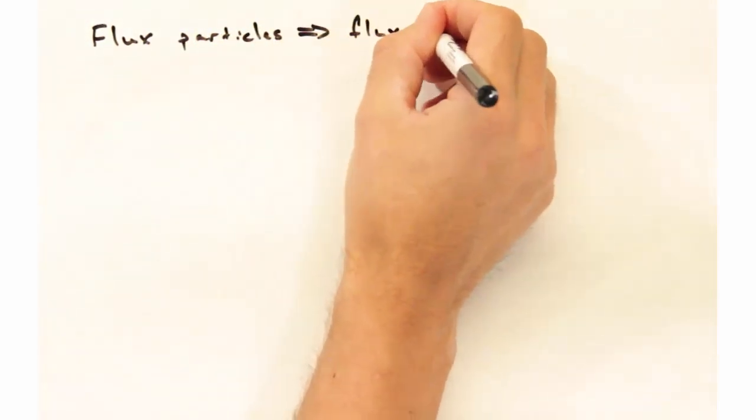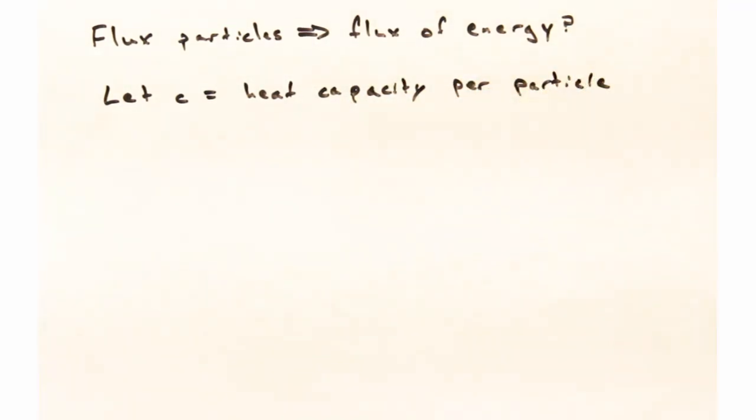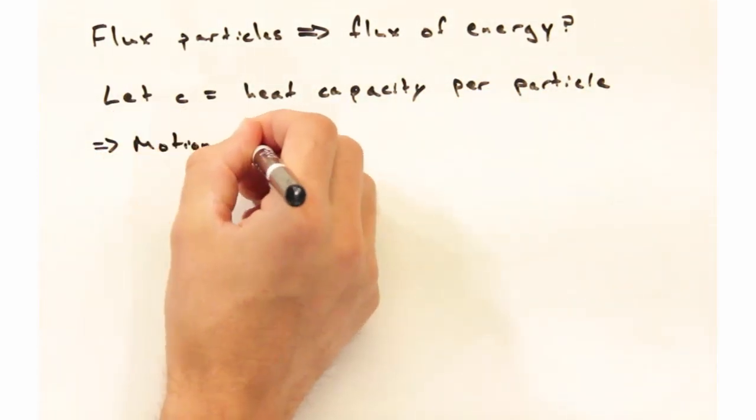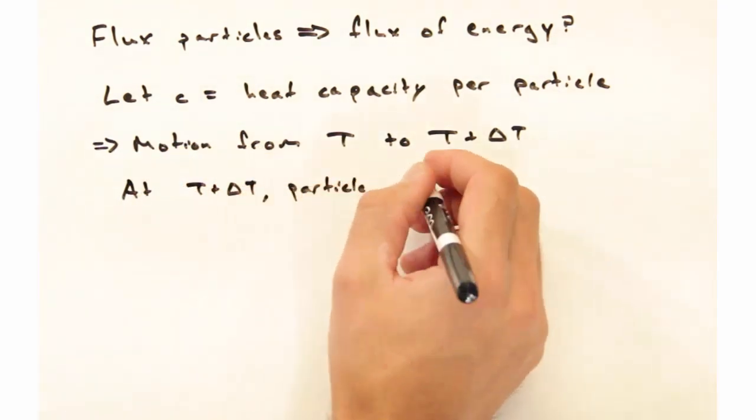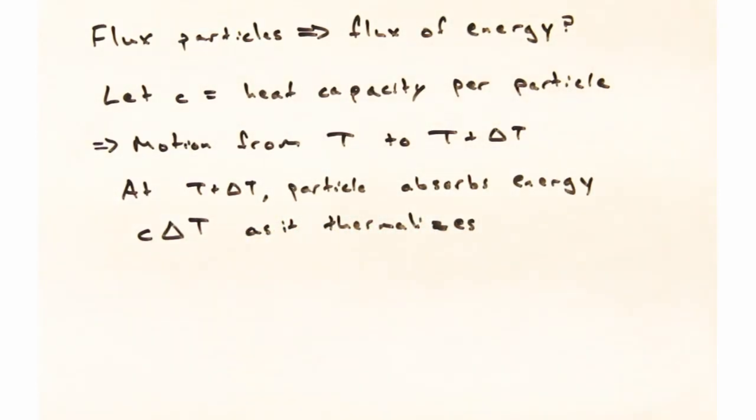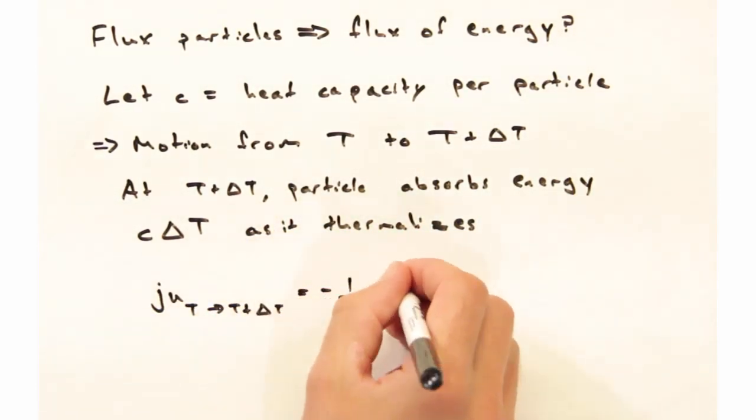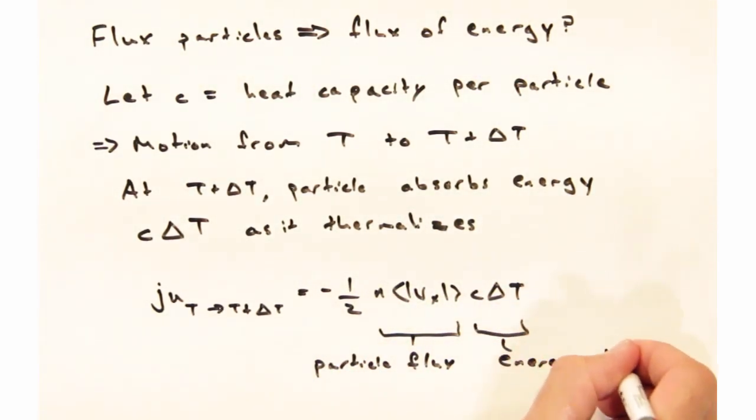Particle flux is all well and good, but we really want to think about the flux of energy. Let's let lowercase c be our heat capacity per particle. If I have a single particle moving from t to t plus delta t, once the particle is at t plus delta t, you might expect it to absorb energy from the system as it thermalizes. The amount of energy you might expect it to absorb would be its heat capacity, c, times delta t. That makes it pretty easy to go from a flux of particles to a flux of energy. All we have to do is multiply by the c delta t term.